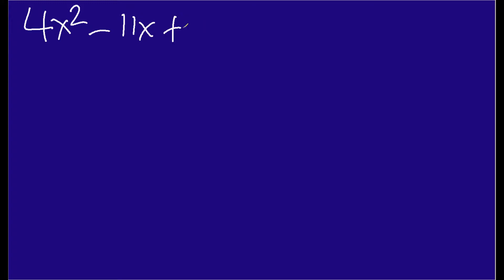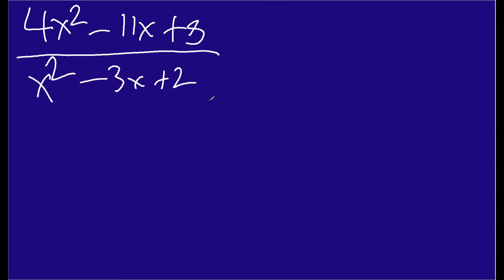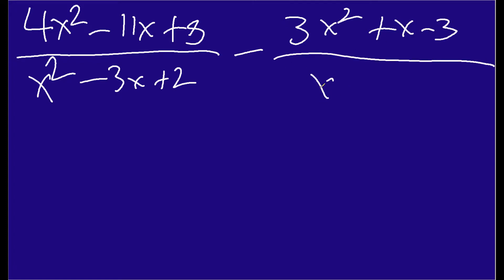In this video, we're going to focus particularly on subtracting rational expressions that have the same denominator. In other words, the bottom number of the rational expression, or the fraction, is the same for the two quantities. So to give you an example, we're going to have this problem: 4x squared minus 11x plus 8 over x squared minus 3x plus 2, and we're going to subtract 3x squared plus x minus 3 over x squared minus 3x plus 2. You can see here clearly we have the same denominator.